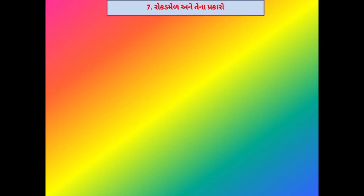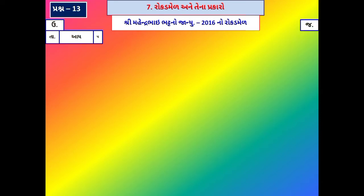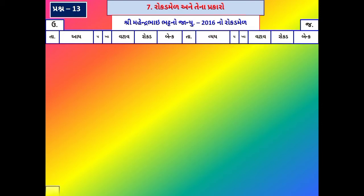નમસ્કાર, સુસ્વાગતમ. ધોરણ અગ્યાર કોમર્સ, નામાના મૂળતત્વ ભાગ એક, પ્રકરણ સાત - રોકડ મેળ. અહીં પ્રકરણ સાતમાંથી ત્રણ ખાનાવાળો રોકડ મેળ તૈયાર કરવાનો અભ્યાસ કરીશું. ત્રણ ખાના વાળો રોકડ મેળ તૈયાર કરવામાં આવશે.